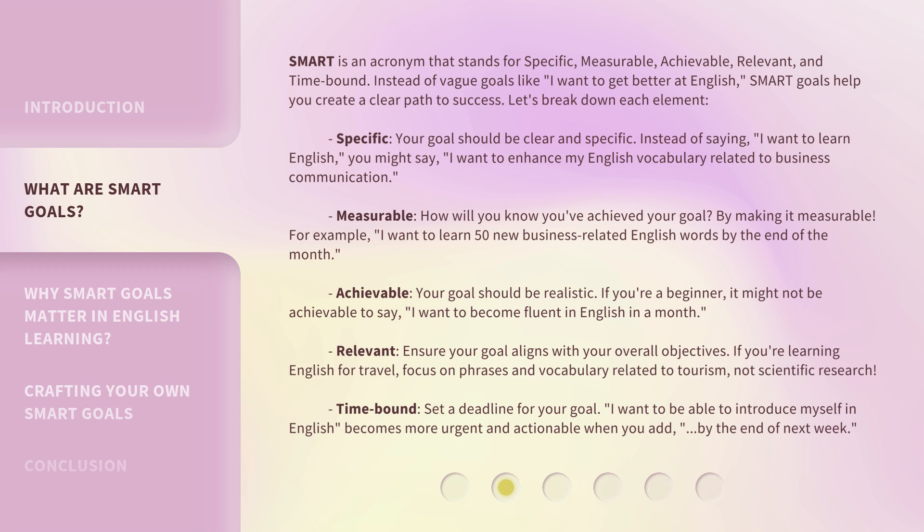Specific: your goal should be clear and specific. Instead of saying "I want to learn English," you might say, "I want to enhance my English vocabulary related to business communication." Measurable: how will you know you've achieved your goal? By making it measurable. For example, "I want to learn 50 new business-related English words by the end of the month."